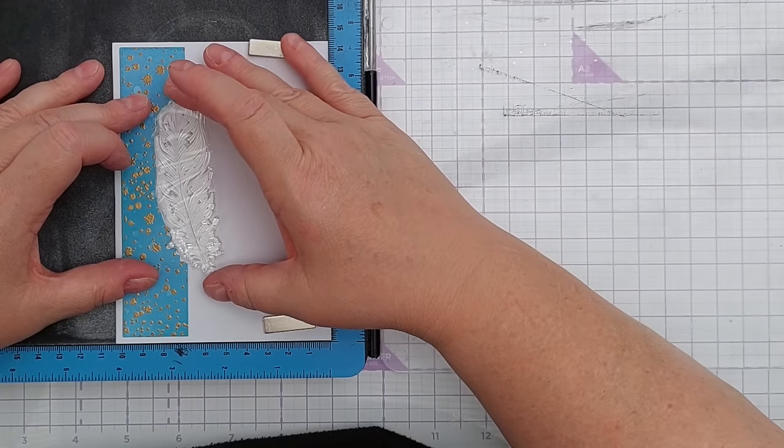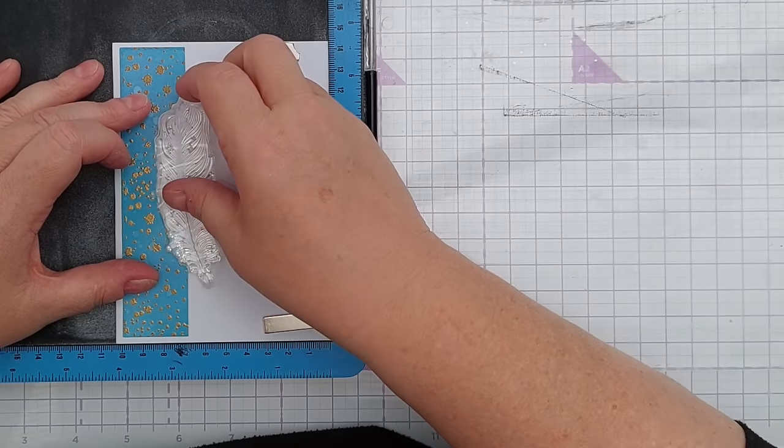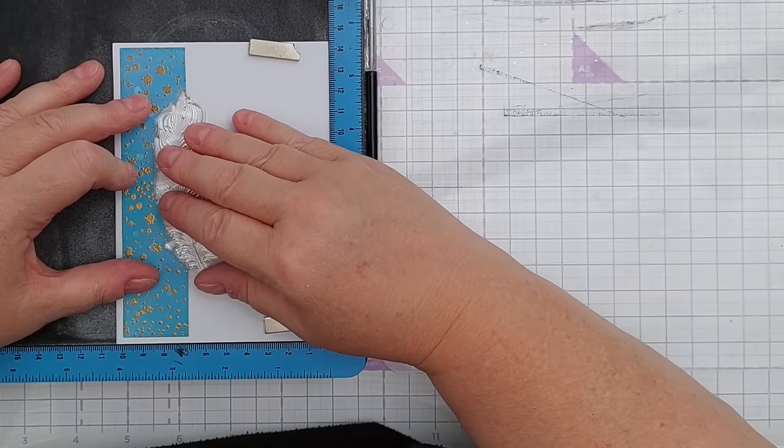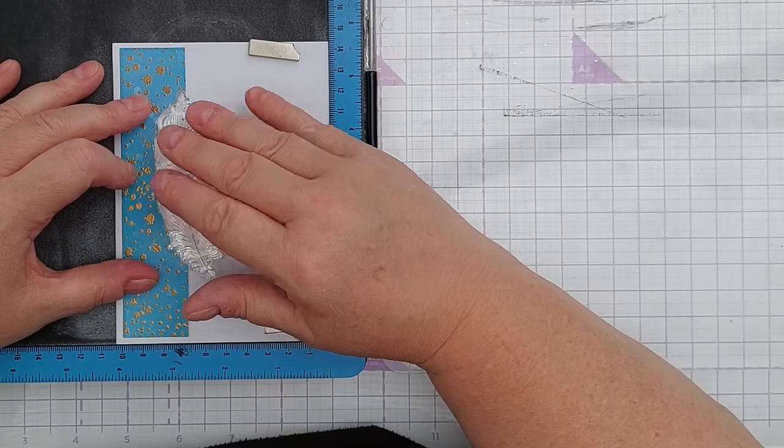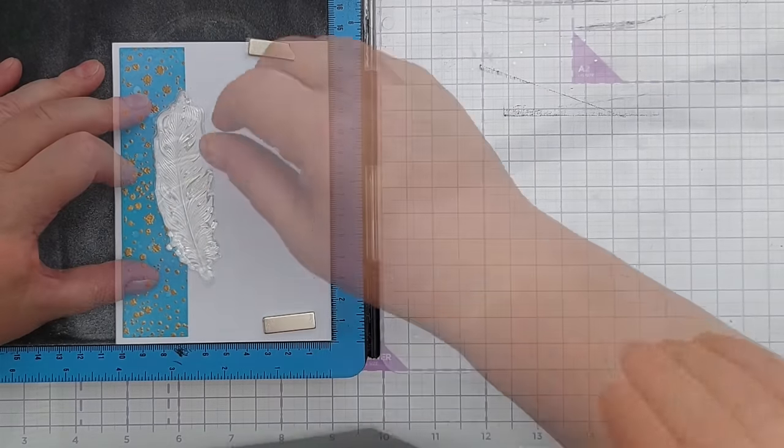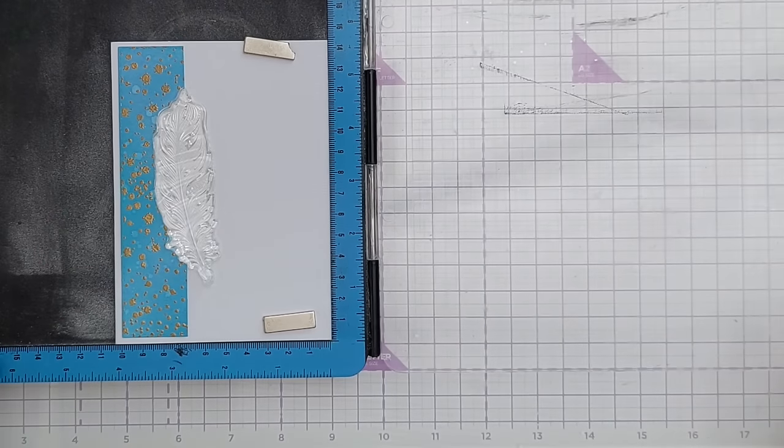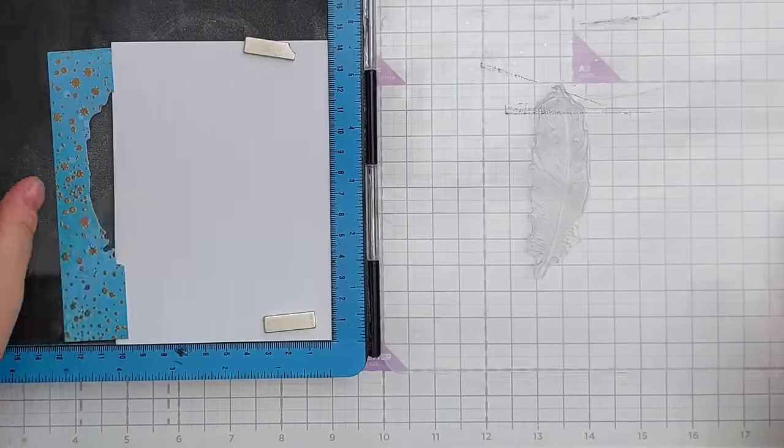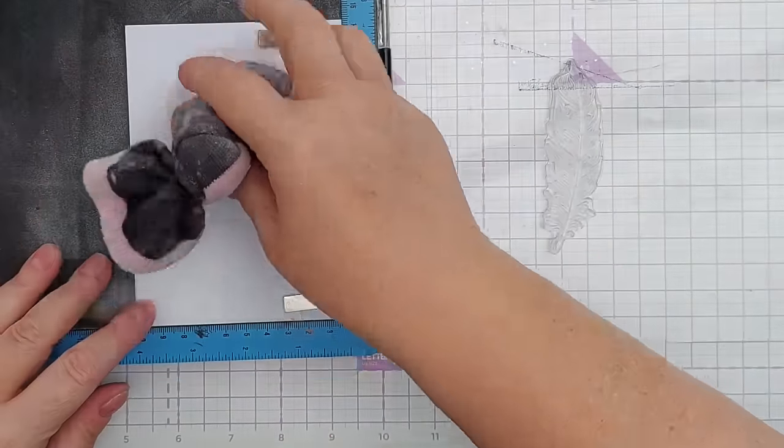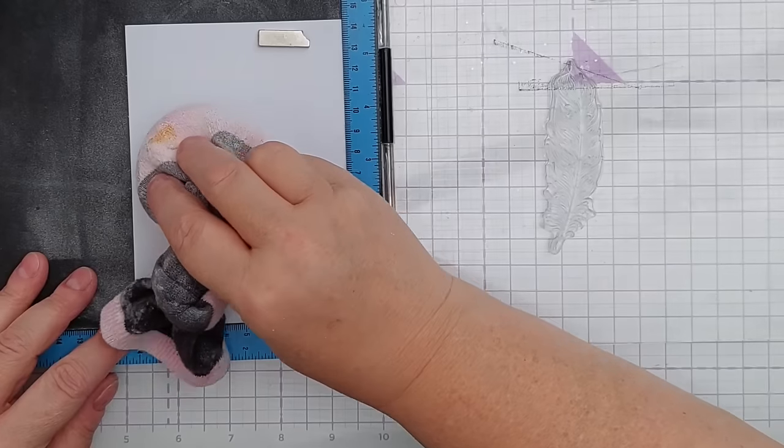And line it up so the stamp goes in the die cut area. I'm going to put my head right over for this. So that is going to be where I want to stamp my feather. I'm going to pick that up, I can move that out of the way for now. I'm going to give this a going over with corn flour.